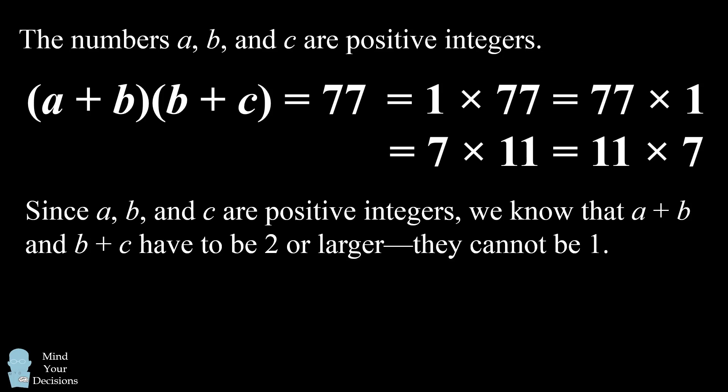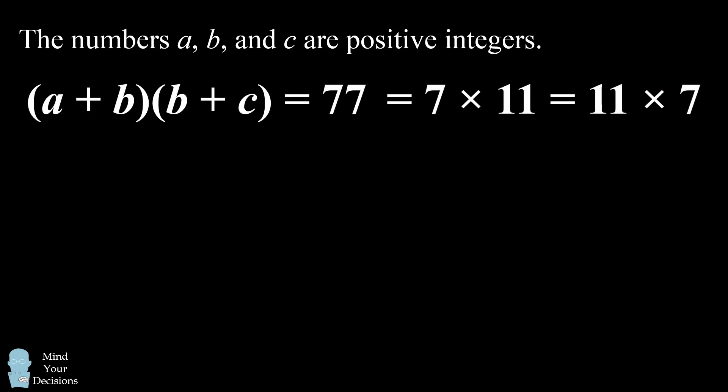Since A, B, and C are positive integers, we also know that A plus B and B plus C have to be 2 or larger. They cannot be 1. So this further removes the possibility that one of the factors is 1. We can eliminate the top two cases. This means we know the two factors are going to be 7 and 11, or 11 and 7. And this will be what's needed to solve the problem.